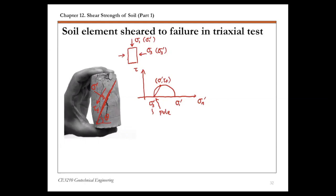Mohr presented a theory stating that a material fails when the shear stress on a certain plane reaches a critical value, which depends on the normal stress on that plane. In other words, material fails due to a critical combination of sigma prime and tau F — a critical combination of normal stress and shear stress — not due to the maximum shear stress or maximum normal stress alone.